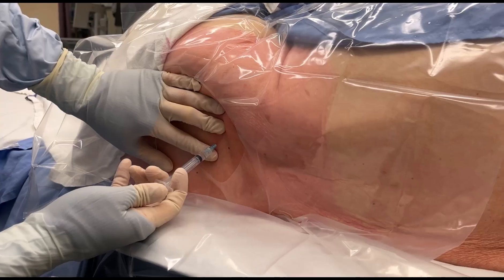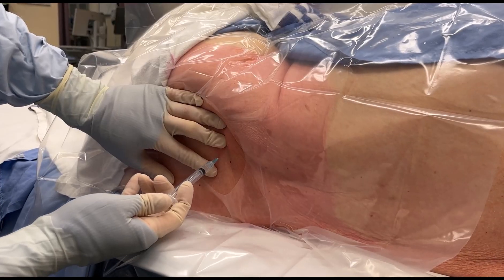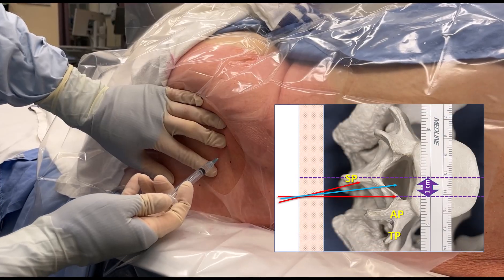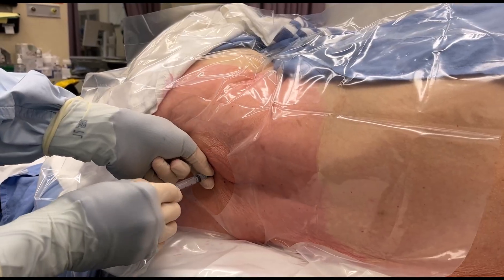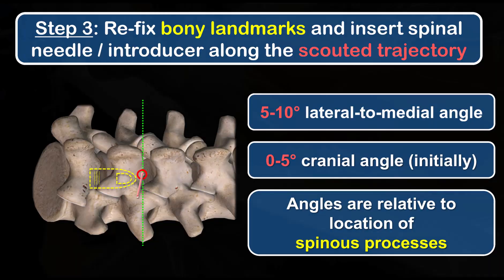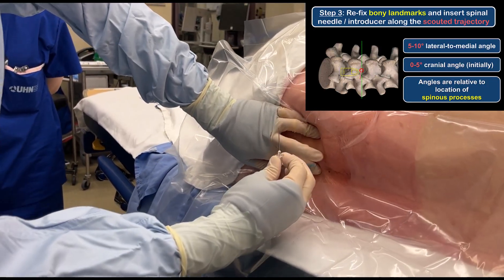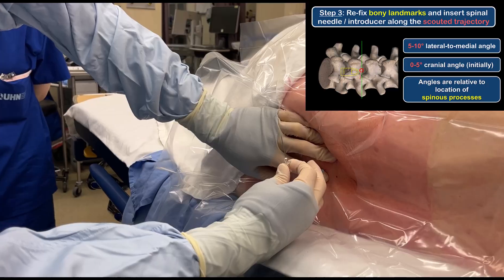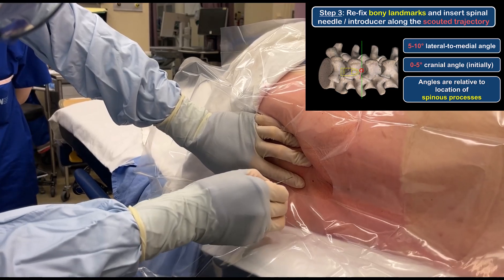The trainee exaggerates the lateral to medial angle to explore for bony contact with the lateral aspect of the spinous process. This establishes the upper limit of the lateral to medial angle and signals that the appropriate trajectory should be somewhere between this angle and perpendicular to the skin. Once an appropriate initial trajectory has been scouted, it is useful to leave the infiltration needle in place as a guide. Re-identify the spinous processes and fix the overlying skin with the second and third fingers of your non-dominant hand as you exchange the infiltration needle for the introducer needle, inserting it at the same 5 to 10 degree lateral to medial angle but starting at 90 degrees to the coronal plane.